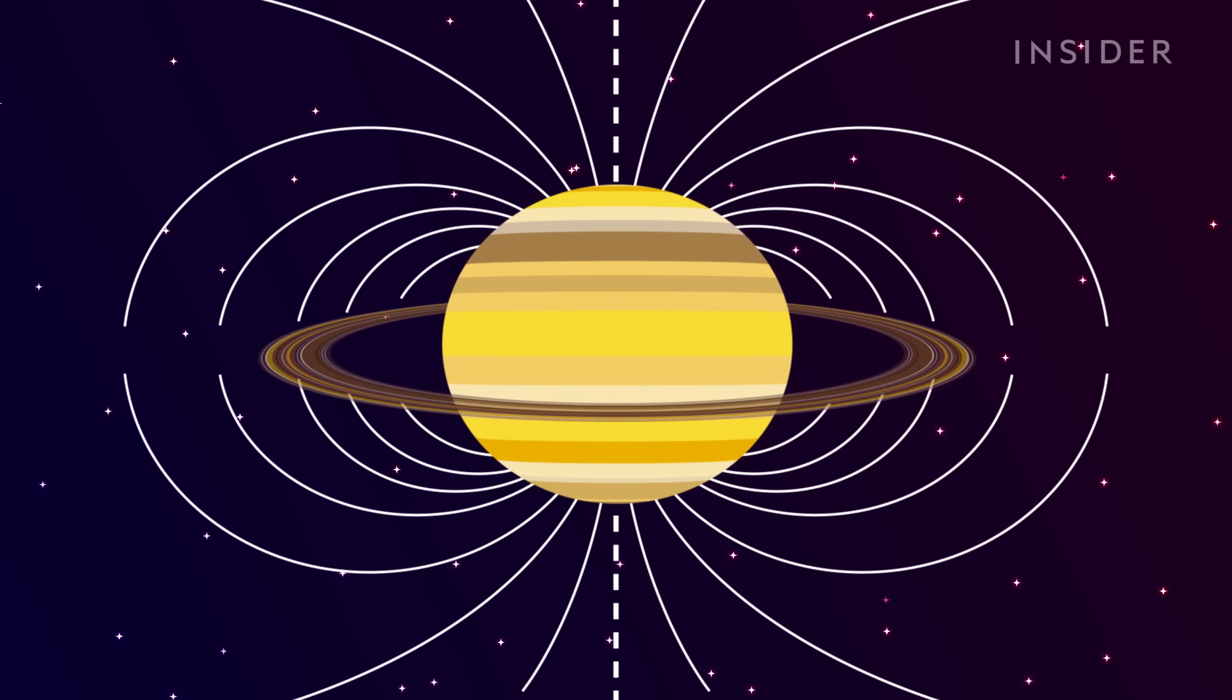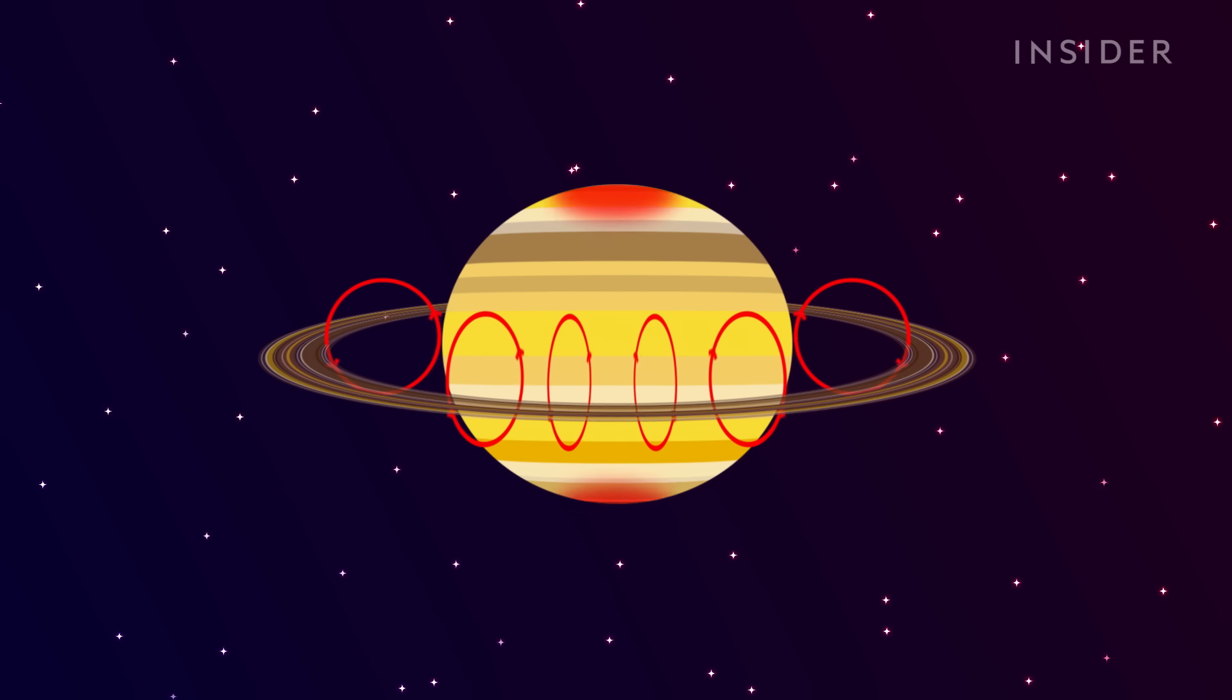It turns out, Saturn's magnetic field generates huge electrical currents, which heat up the atmosphere at the poles.